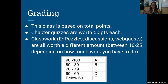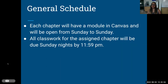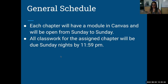This class is based on total points. Chapter quizzes: every single chapter you will have a quiz worth 50 points, and then you will have other random classwork assignments — Edpuzzles, discussions, web quests — they're all worth a different amount of points, sometimes 10, sometimes 25, depending on the amount of work. Each chapter will have a module in Canvas. They will be open from Sunday to Sunday, and all work for the chapter will be due Sundays at 11:59 PM. You may do your work Monday, Tuesday, or wait till Sunday — it's totally up to you as long as it is in by Sunday at 11:59 PM. I don't recommend waiting to the last minute because you will get very overwhelmed.